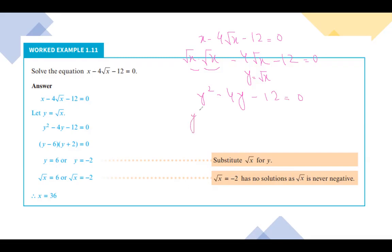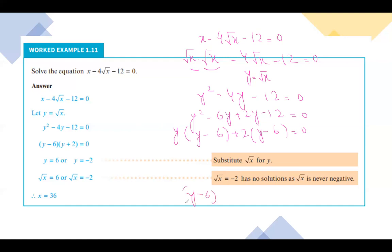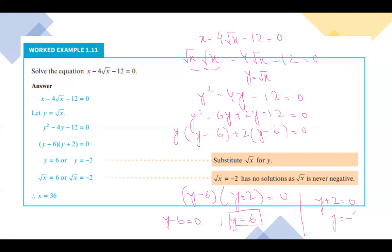Expanding: y² minus 6y plus 2y minus 12 equals to 0. Taking y as common: y times (y minus 6) plus 2 times (y minus 6) equals to 0. So the factors are (y + 2)(y − 6) = 0, giving y minus 6 equals to 0 and y plus 2 equals to 0.